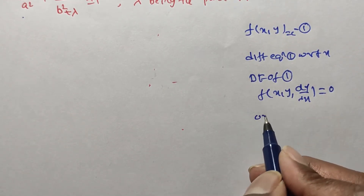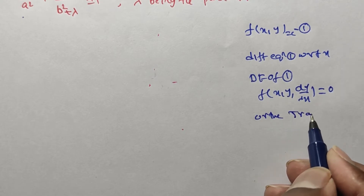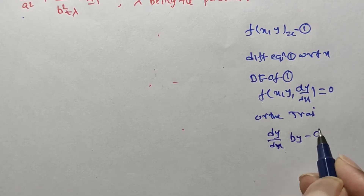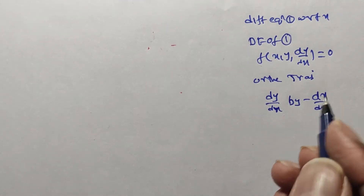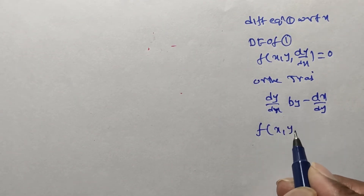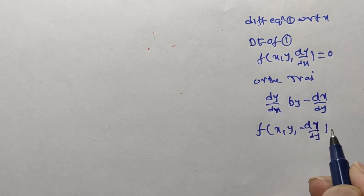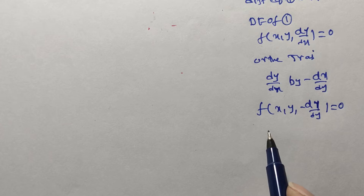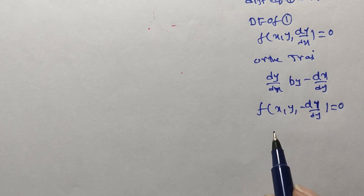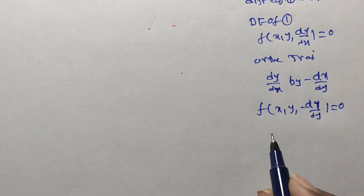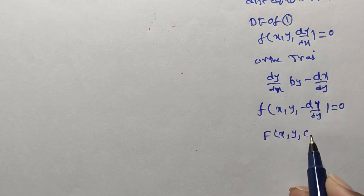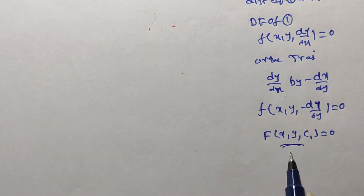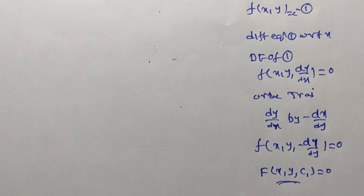We require the orthogonal trajectory. For that, we replace dy/dx with −dx/dy. Then we have f(x, y, −dx/dy) = 0, which is the orthogonal differential equation — first order and first degree. Simplify using the variable separable method, inspection method, or any other method, and we get the solution f(x, y, c₁) = 0. This is the orthogonal trajectory of the given family.